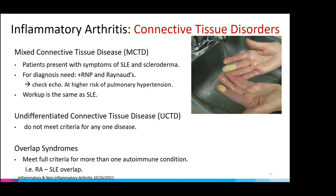MCTD patients present with symptoms of both lupus and scleroderma. For diagnosis, you need positive RNP and Raynaud's phenomenon — fingers turn white, then blue, then red upon rewarming. All MCTD patients need an echo because RNP antibody confers higher risk of pulmonary hypertension. Otherwise workup is the same as lupus. UCTD means the patient does not meet criteria for any one disease but you suspect a connective tissue disorder. Overlap syndromes occur when patients meet full criteria for more than one condition — a common example is RA and SLE.